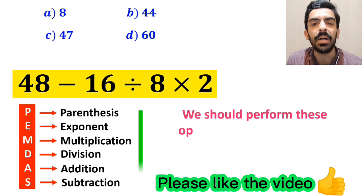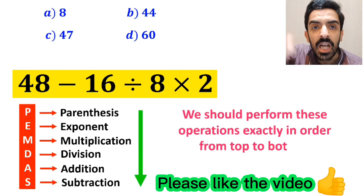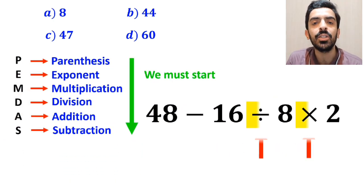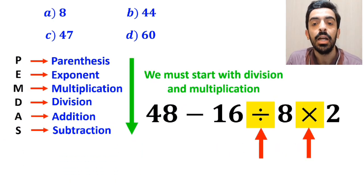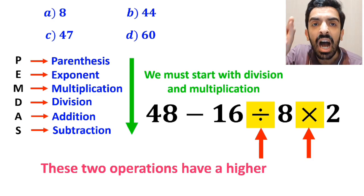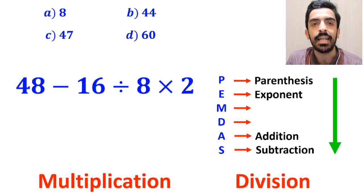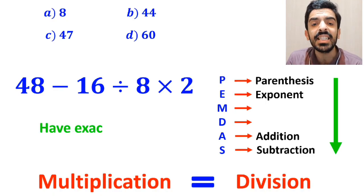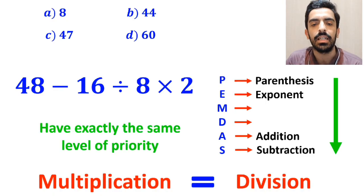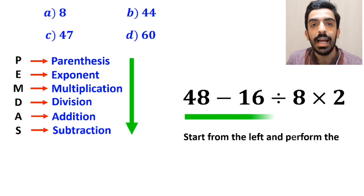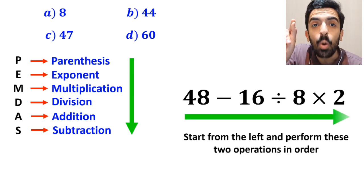We should perform these operations exactly in order from top to bottom. According to the PEMDAS rule, we must start with the division and multiplication, because these two operations have a higher priority than subtraction. However, it's very important to keep in mind that multiplication and division have exactly the same level of priority. In this situation, the best approach is to start from the left and perform these two operations in order.